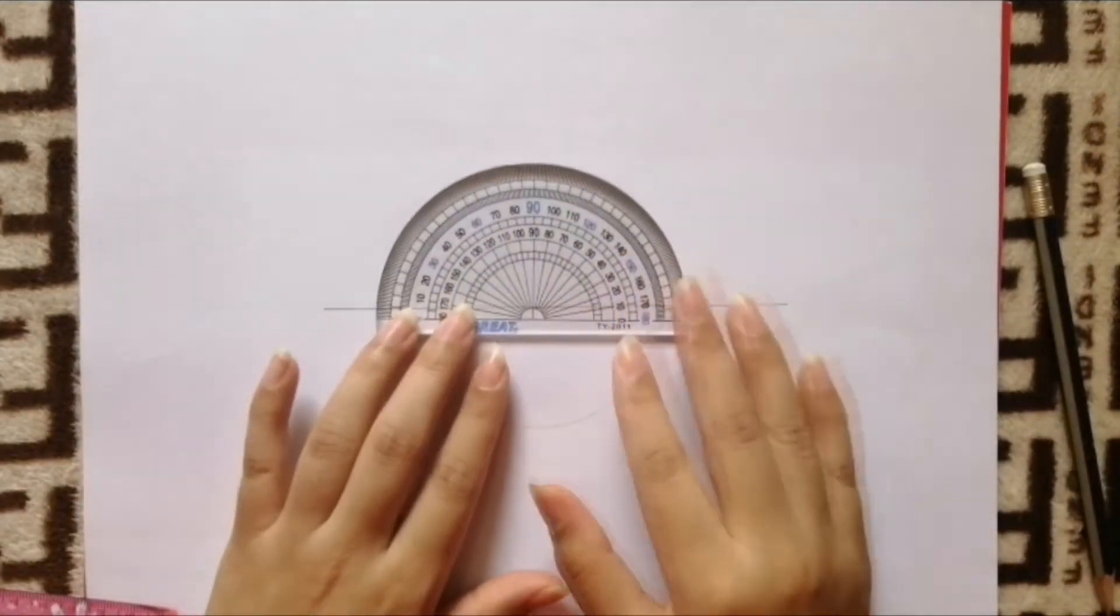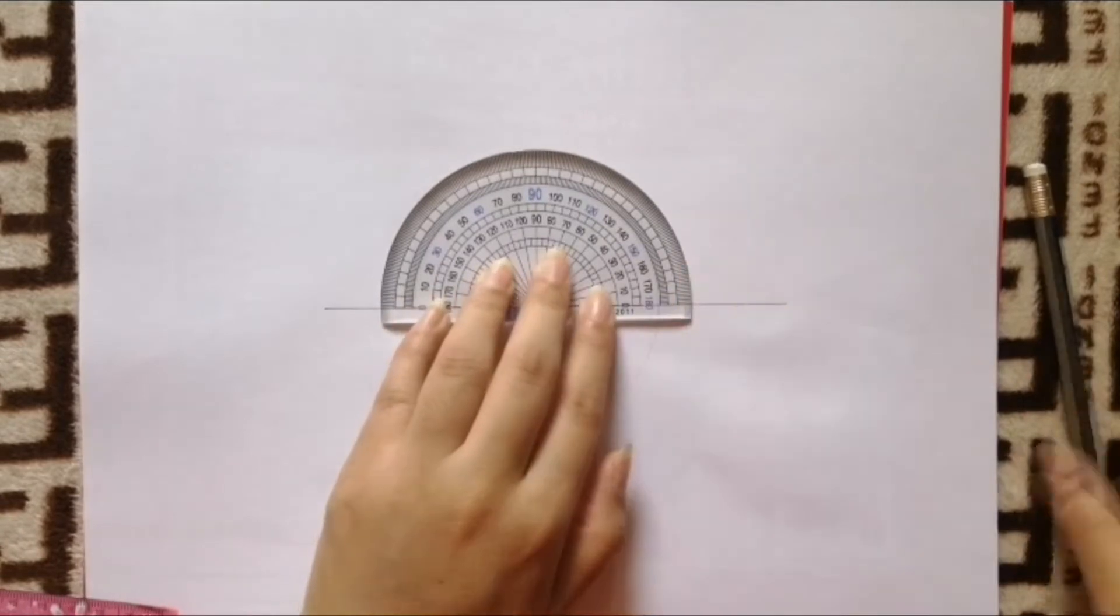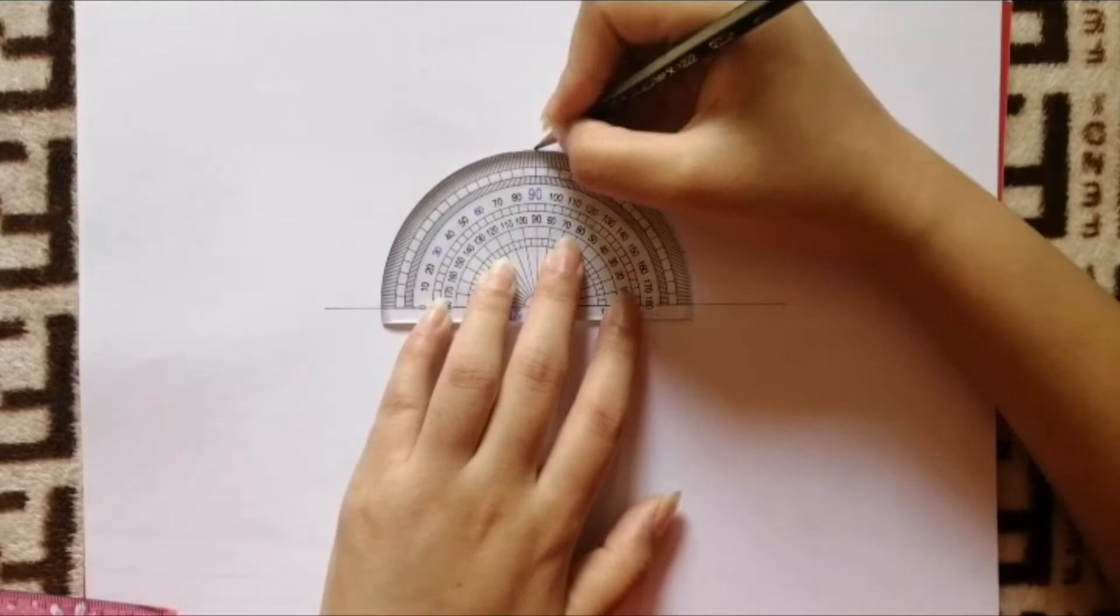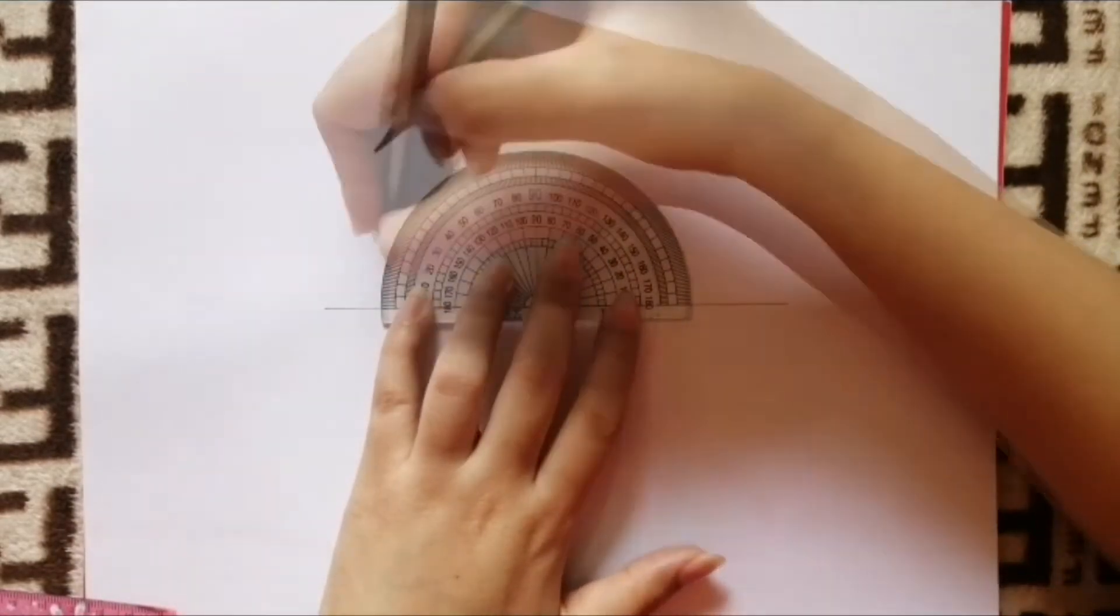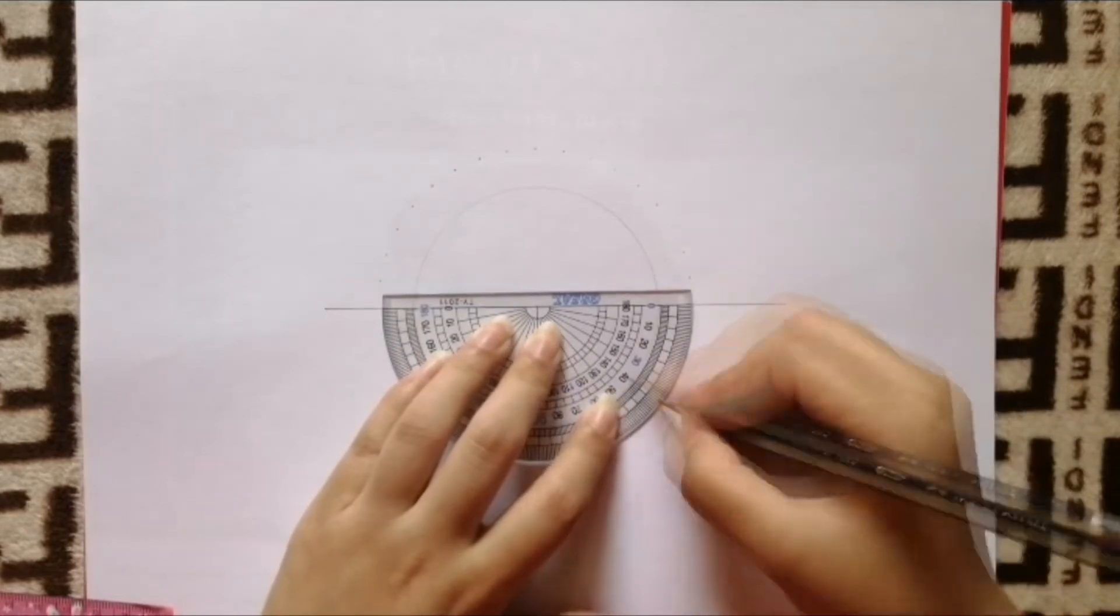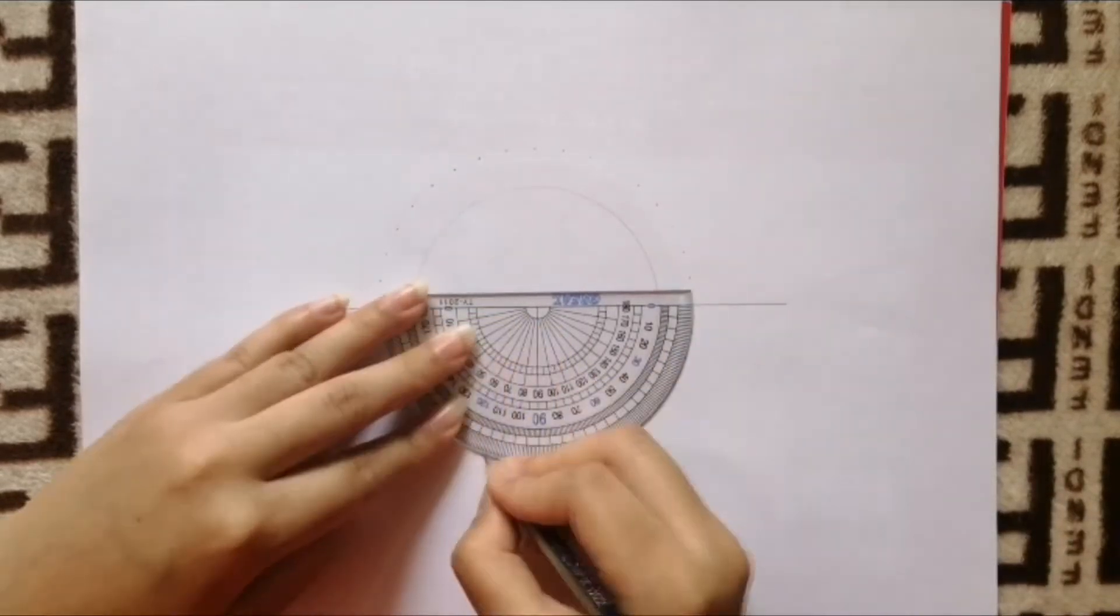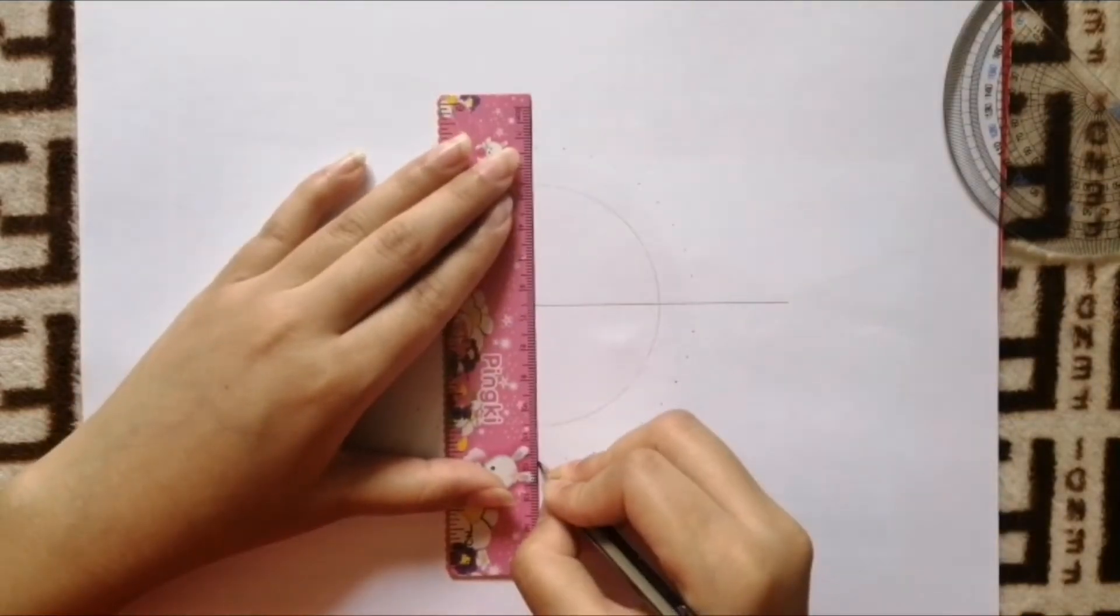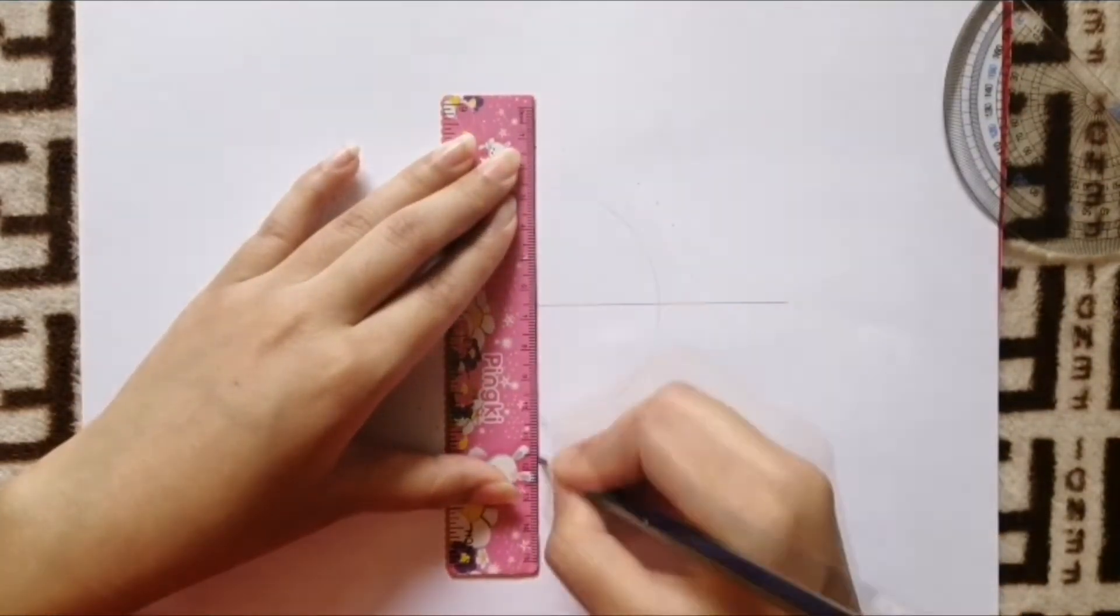Then take your protractor, place it on the center, and mark a point at each 10 degrees: 10, 20, 30, and so on. Do the same on the other side to be more precise when you draw the grid lines. After that, take a ruler and pencil and join all the opposite points.